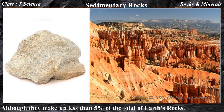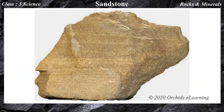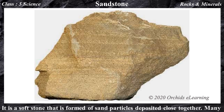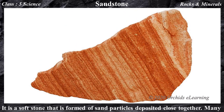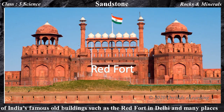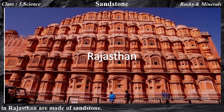Let us see the examples of sedimentary rocks. Sandstone — it is a soft stone that is formed of sand particles deposited close together. Many of India's famous old buildings such as the Red Fort in Delhi and many places in Rajasthan are made of sandstone.